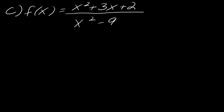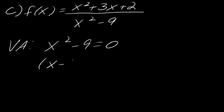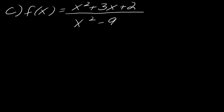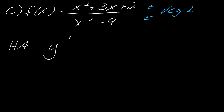Here's another example. For the vertical asymptote, I set the denominator equal to 0 and it factors, giving x equals 3 and x equals negative 3. For the horizontal asymptote, both the numerator and denominator have the same degree, so using the leading coefficient method I get 1 over 1, which equals 1. The horizontal asymptote is y equals 1.